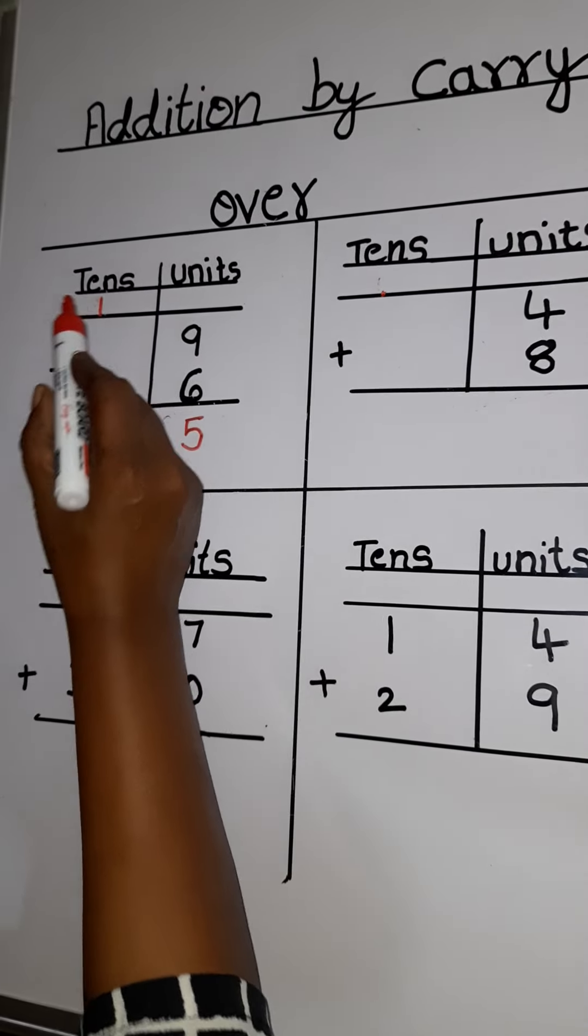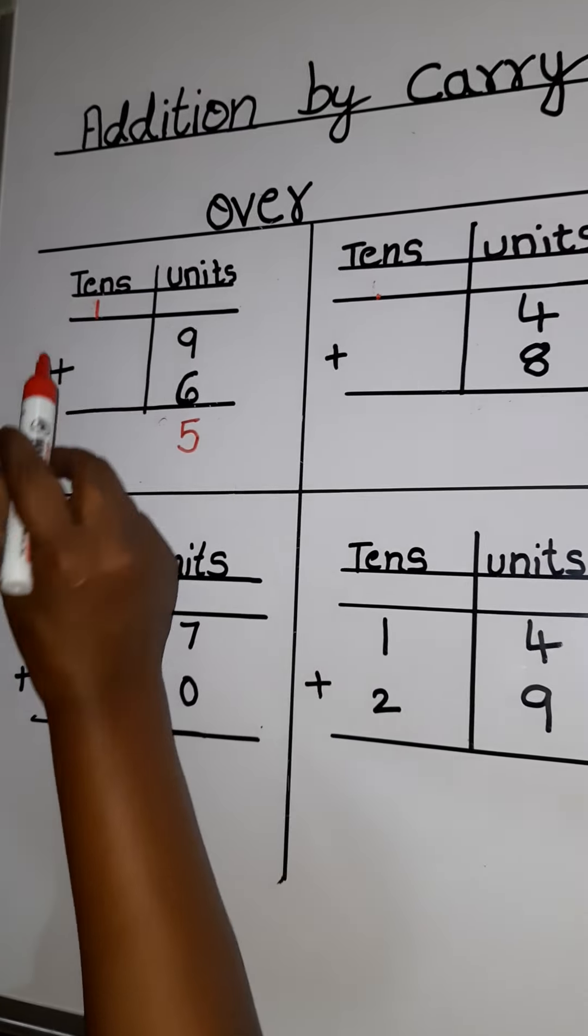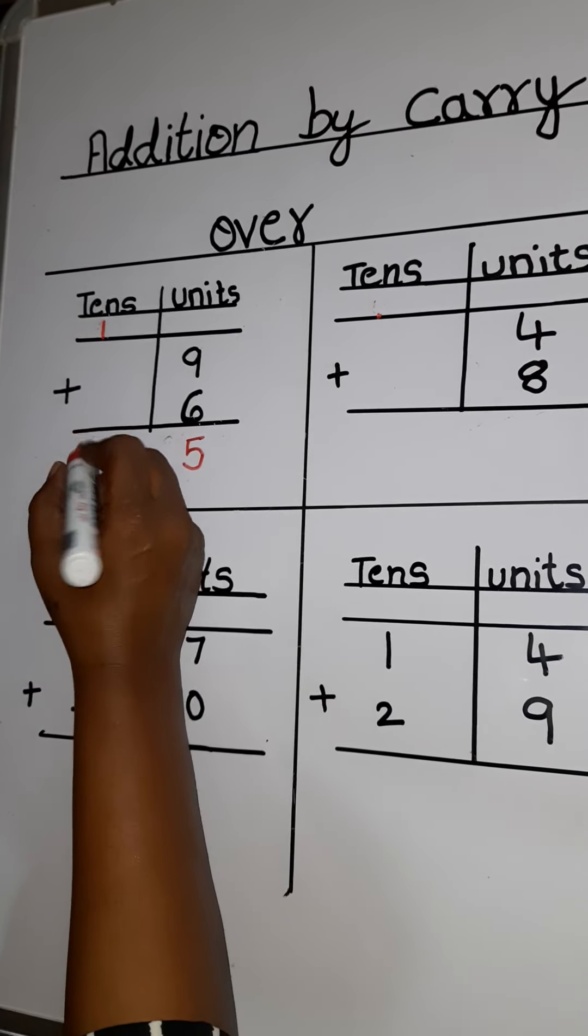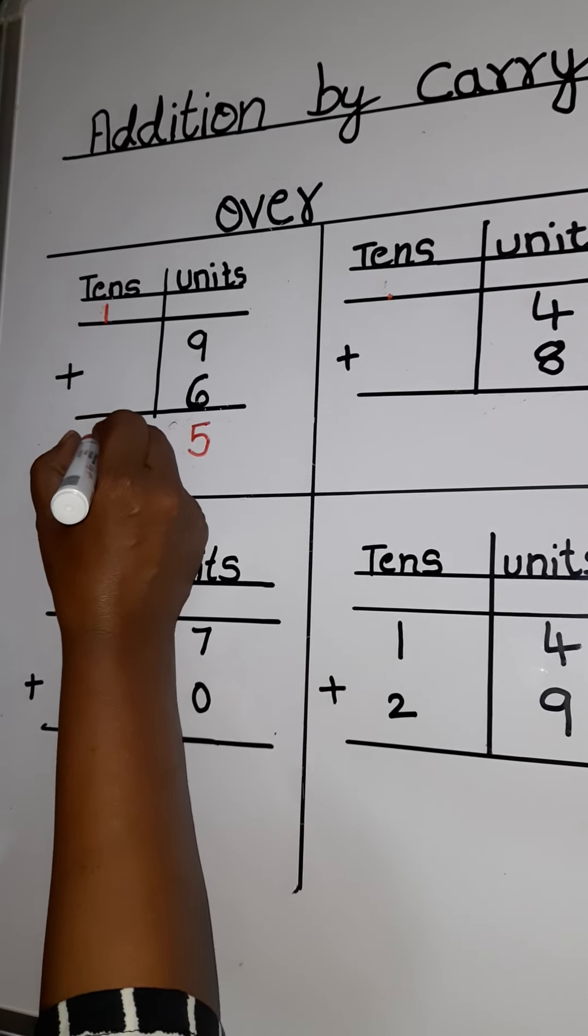So now 1, there is no number here. 1 plus, no number is there. So the number remains the same under 10's place and you get the answer as 15.